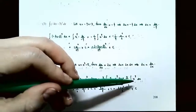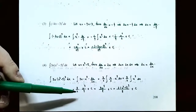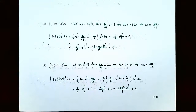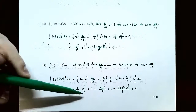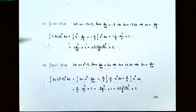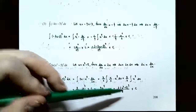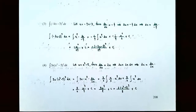The last step is to replace u with the inside function x² minus 5. So the answer is 3(x² minus 5)^4 / 8 plus C, the family of antiderivatives for this original function.